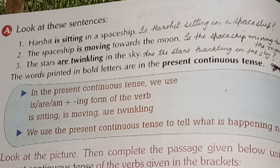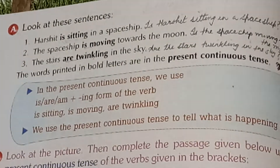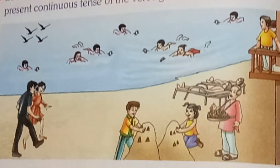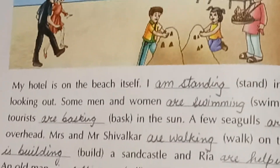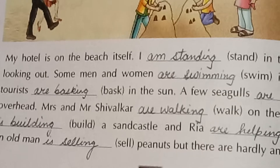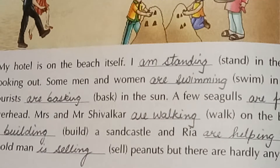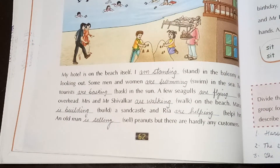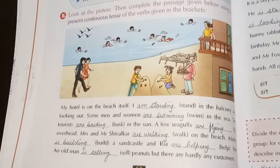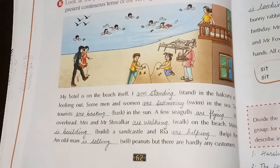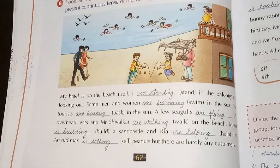Hope you have understood how to do the present continuous tense. So children, we can do the exercise part. In your books you have the picture, and we can write this paragraph in present continuous tense form using is, am, or are plus the ing form of the given verb.